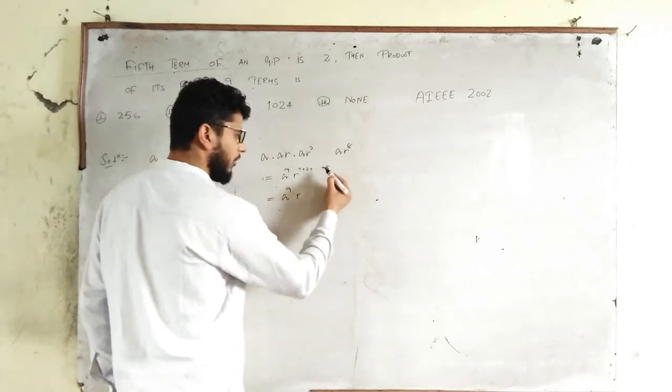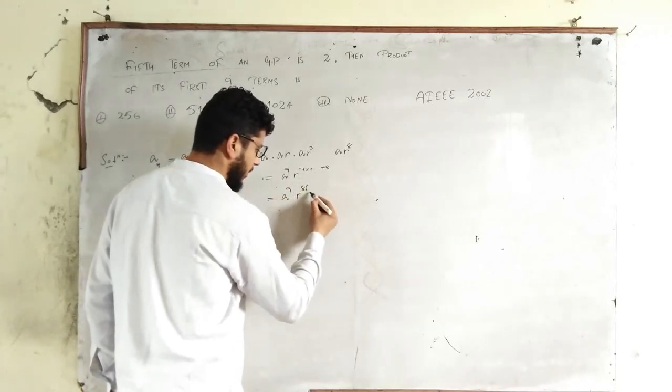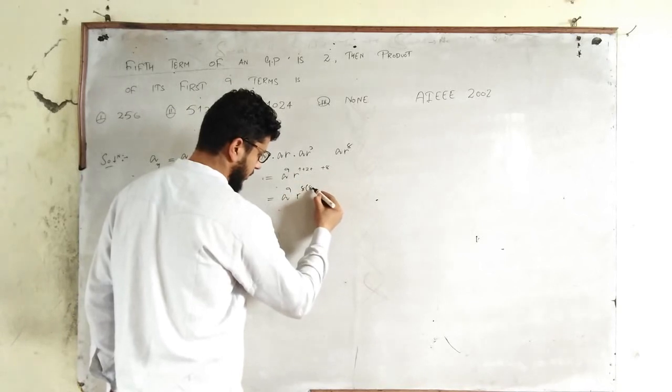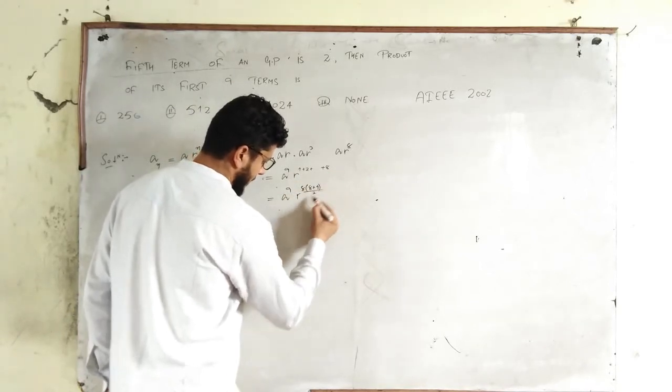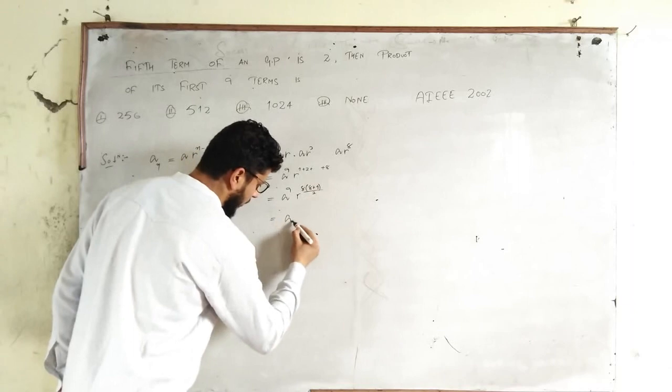Now, for R, the exponent is the sum of naturals up to 8, which is (8+1)/2. So you get A^9.